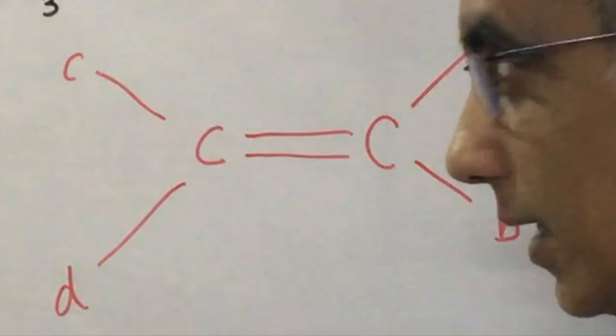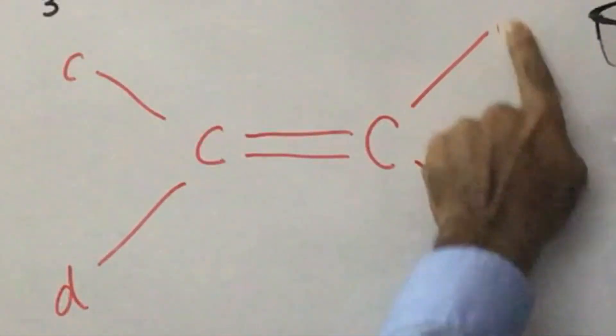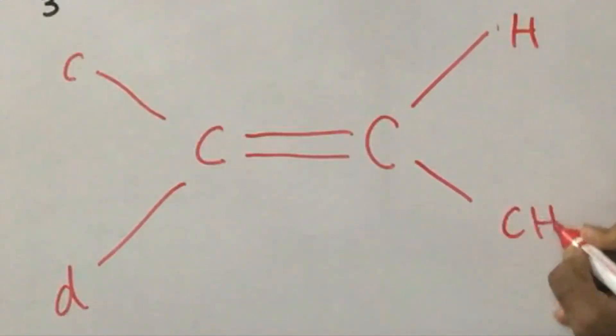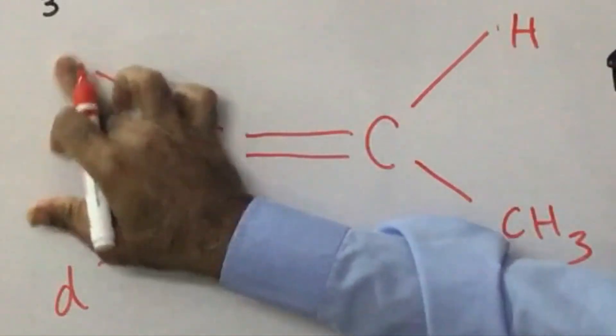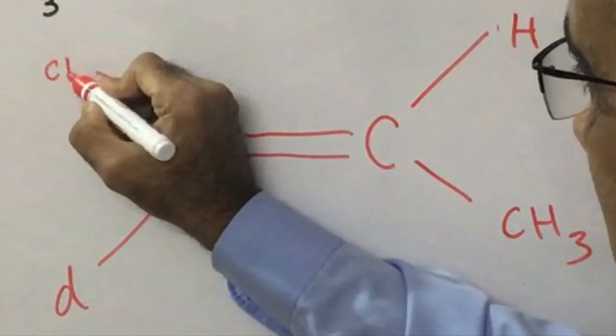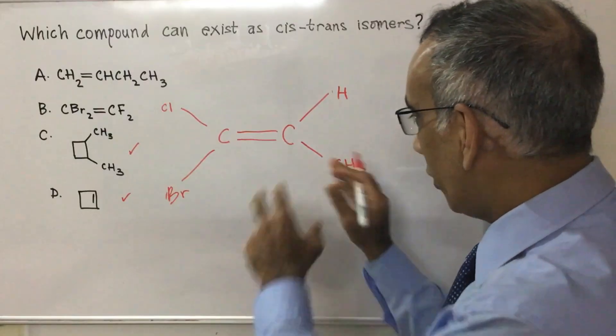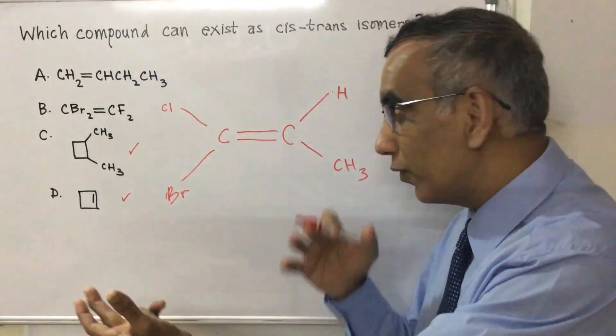And the same on this side. So whatever you have here, if it's an H, and if it's a CH3 here, and if it's a Cl here, and if it's a Br here, whatever you have, they can't be moved back and forth.